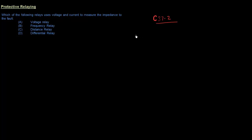What we will be doing is covering four of these relays in particular through this question. So let's read the question first and then we'll go into the details of each one and see which best fits the answer. The question is: which of the following relays uses voltage and current to measure the impedance to the fault? The choices are: voltage relay, frequency relay, distance relay, and differential relay.